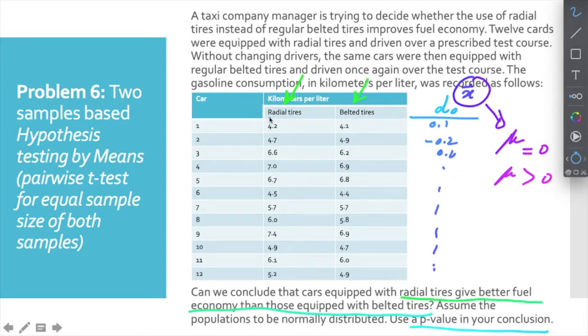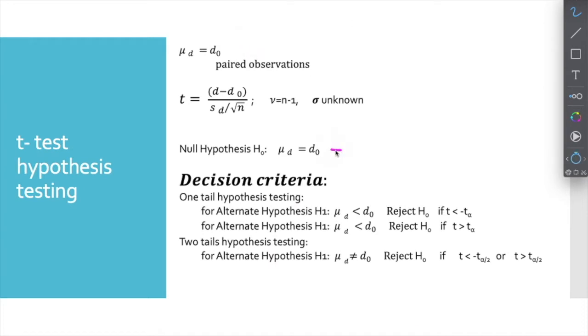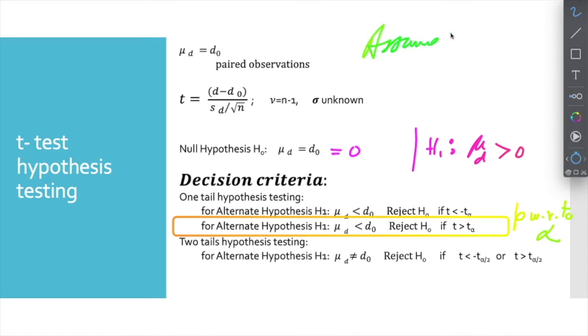We are subtracting performance of second belted tire from performance of radial tire. It becomes a very simple t-test, we call it pairwise t-test. Our null hypothesis is mu equals zero. Our alternate hypothesis is this difference is more than zero, because we have to test the claim that radial tire is making with respect to the belted tire. We will not compare the t value, rather we will compare p-value. We can assume alpha as 0.05 because 0.05 is a kind of standard proof.